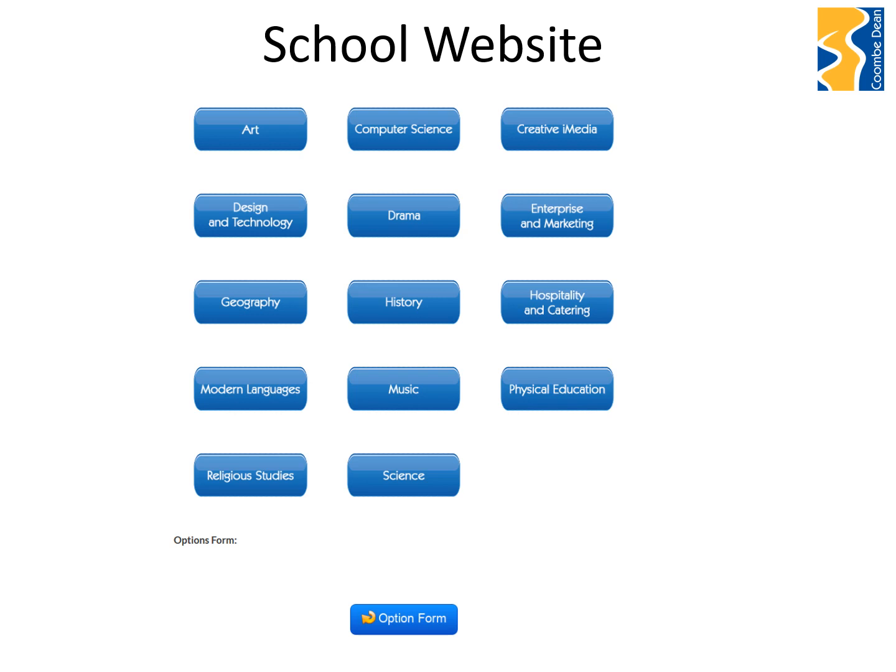Further down on this section of the website, as you scroll, you will find buttons that look like the ones on the screen. Clicking on each of those will take you to a short video presentation, a bit like this one, which will talk you through the subject, the topics and content covered, and how those qualifications are assessed. Those presentations have been created by the subject leaders for each individual subject. At the bottom of the page you have the options form itself, or a link to that Microsoft form. I would really encourage you to click on the science video to make sure you have a full understanding of the difference between the combined science route and the separate science — or triple science — route, which is explained by Mr McDermott, the head of science.